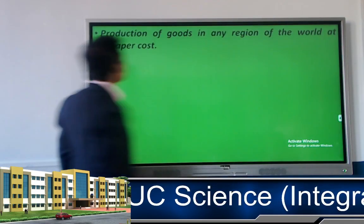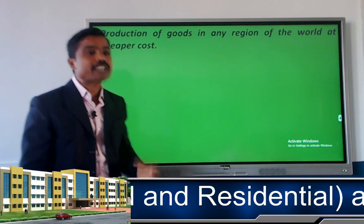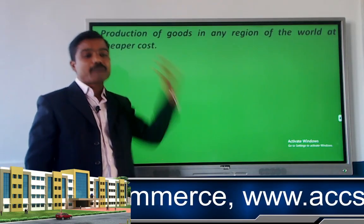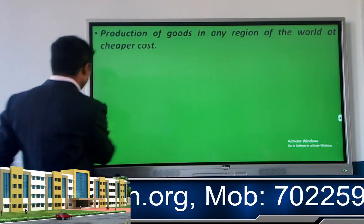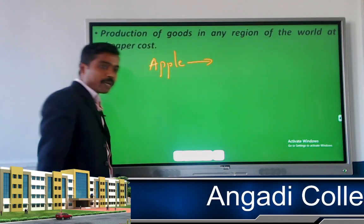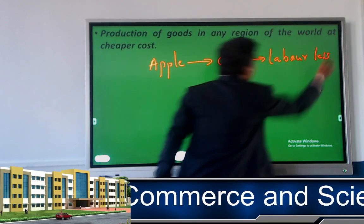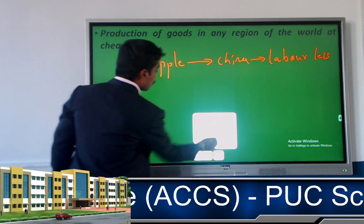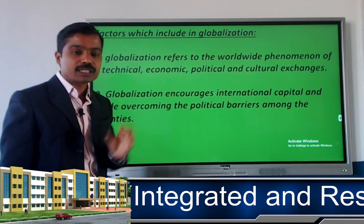The fourth point is production of goods in any region of the world at the cheapest cost. We can undertake manufacturing at any corner of the world where production cost is less. For example, Apple company gives its manufacturing to China because labor cost there is very less. That is the fourth point from the IMF definition of globalization.